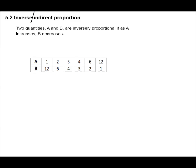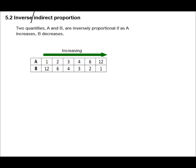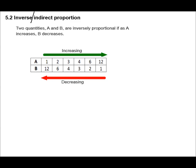Now, what happens here is the two quantities are in an inversely proportional relationship. As A increases — going 1, 2, 3, 4, 6 and so on — look at what happens to B: 12, 6, 4, 3 — B is decreasing. The first thing we check when identifying the type of proportion is whether one quantity increases while the other decreases. If so, we test for inverse proportion.